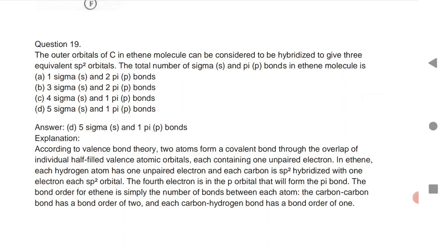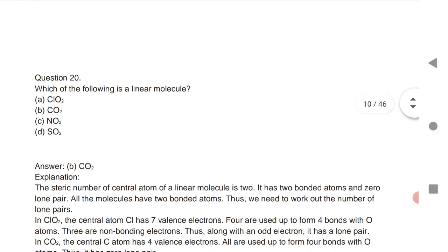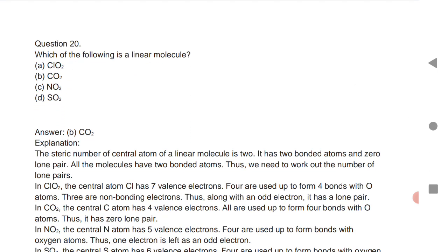An atom in the outermost orbit of C in ethene molecule can be considered hybridized to give three equivalent sp2 orbitals. Total number of sigma and pi bonds in ethene molecule - you can easily calculate. Write the structure of ethene: there is a double bond between the two carbons, so the structure will be CH2=CH2. You will find five sigma bonds and one pi bond.